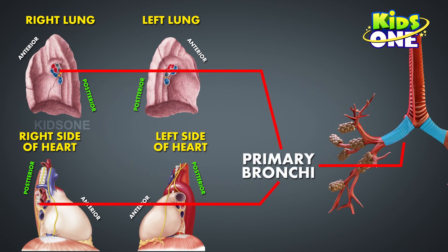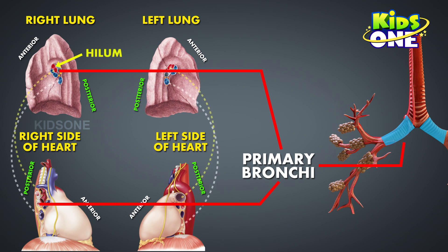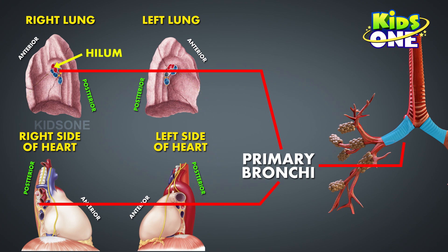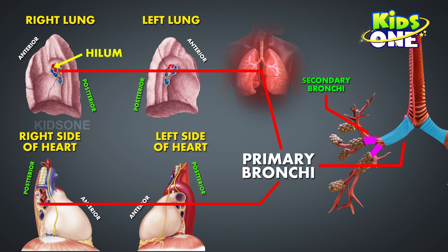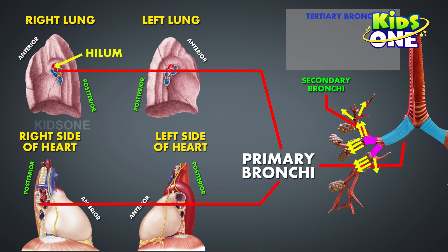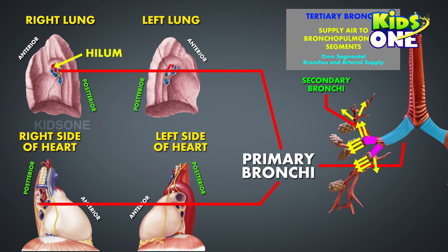The main or primary bronchi enter the lungs at the hilum, which is an area on the mediastinal surface of the lung through which structures enter and leave the lung. These primary bronchi branch into the lobar or secondary bronchi, which supply air to each of the lobes. The secondary bronchi then branch into the segmental or tertiary bronchi, which supply air to the bronchopulmonary segments — subdivisions of the lobes. Each bronchopulmonary segment has its own segmental bronchus and arterial supply.